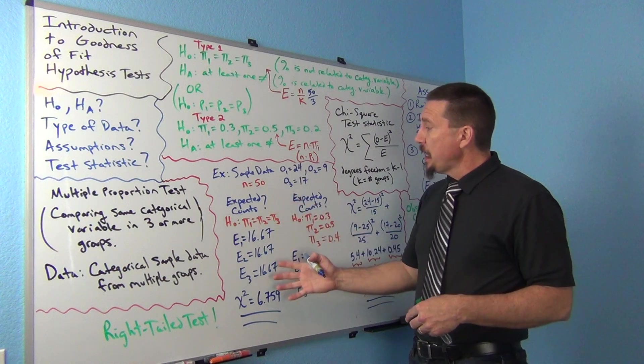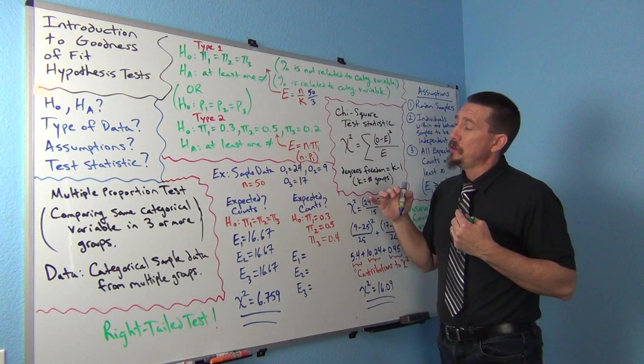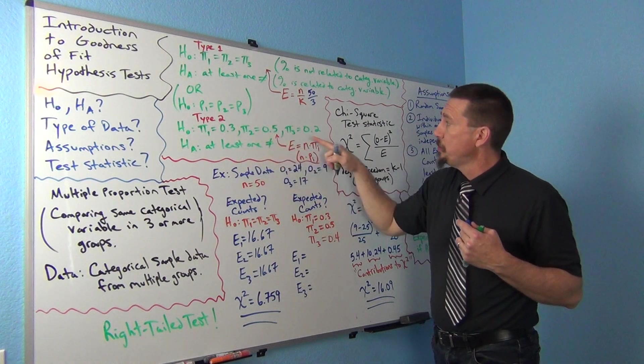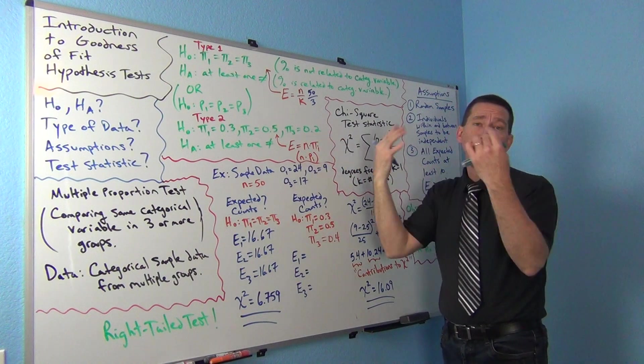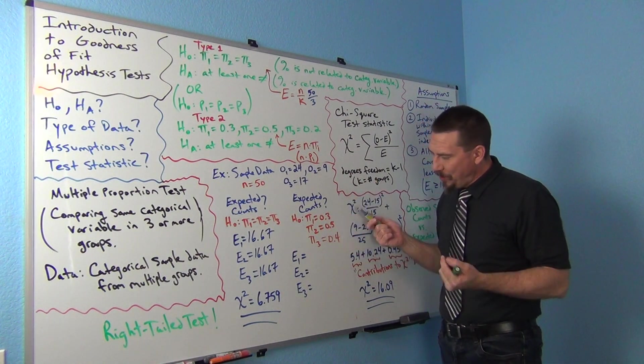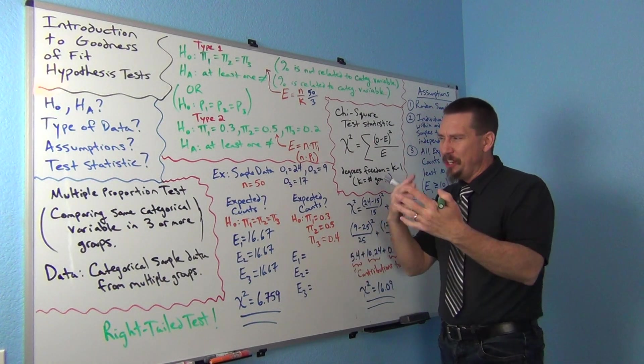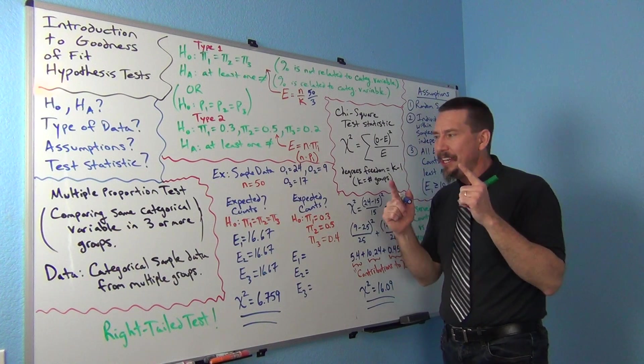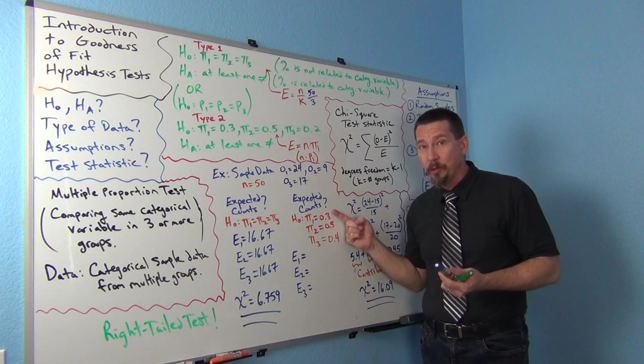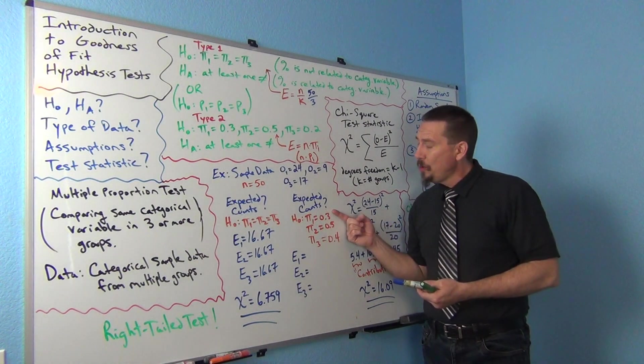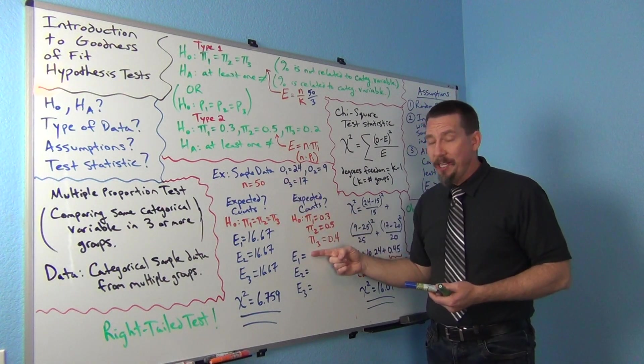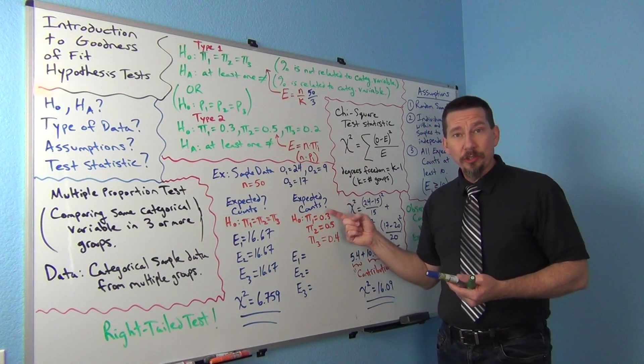So now what about, what would be the expected counts if we had the other one, this null and alternative where the population one, we know they're not equal. We know we think population one is 30%, population two is 50%, and population three is 20%. Well, now what do we expect to happen? Again, it's what do you expect if the null is true? So if this null was true, what would we expect? A lot of people rely a lot on formulas, what's the formula for it, I got to remember the formula. But just think in your head, you might be able to come up with what would you expect to happen. If the null is true, don't I expect about 30% to come from group one? Because that's what the null hypothesis says. So these 50 people, I would expect 30% of those 50 people or 0.3 of those 50 people to be in group, come from group one, if the null was true. Does that make sense?